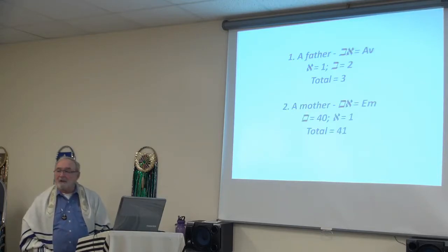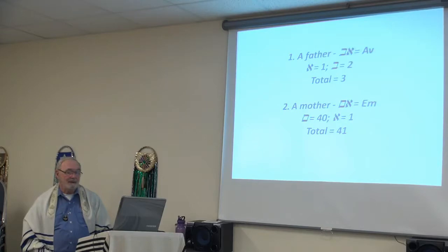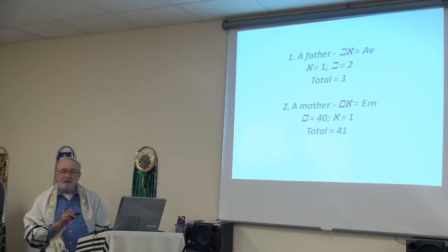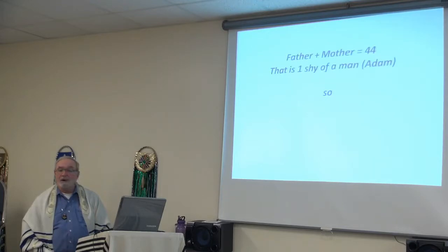The second one required is a mother. In Hebrew that is em. The letters are aleph and mem sofit. The mem equals 40 and the aleph equals one, so we have a total of 41. If I add the father and the mother, what do I have? Father plus mother equals 44. That is one shy of 45, which is required for a human being, or Adam.